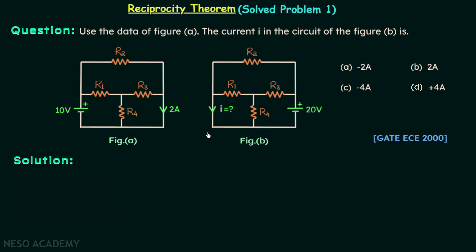We need to find current in this branch of this network. If I assume this branch is branch x and this branch is branch y, then this branch will be branch x and this branch will be branch y.